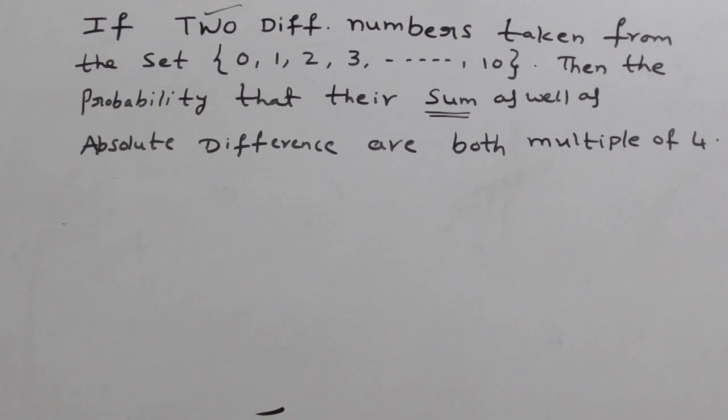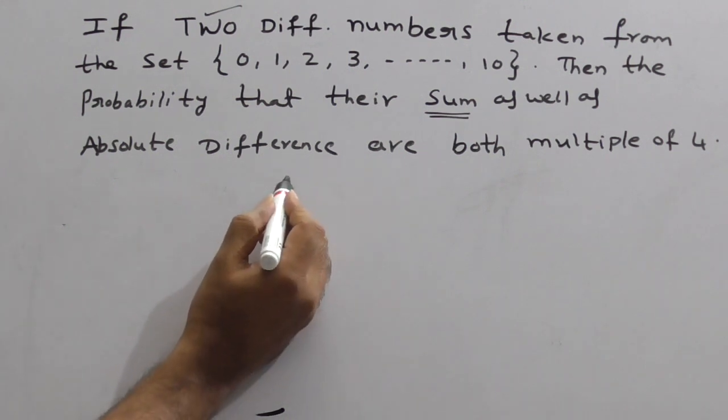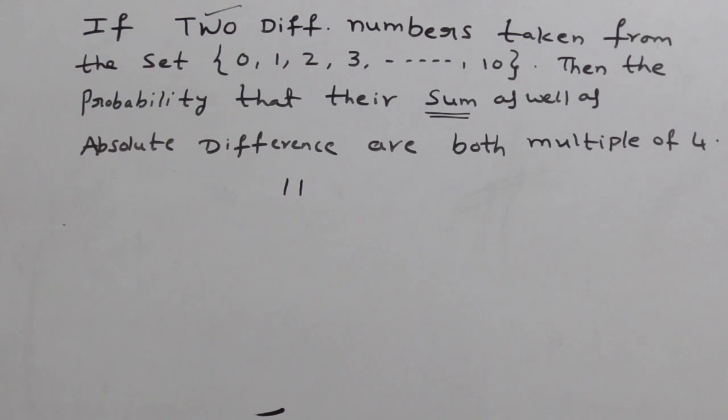So this is very interesting question from probability. Observe here, two different numbers taken from the set 0 to 10. From 0 to 10, how many numbers are there? Yes. So in the given set, there are 11 numbers.